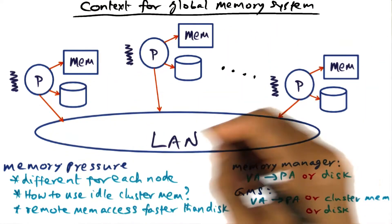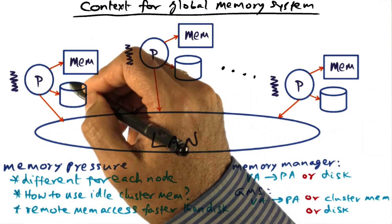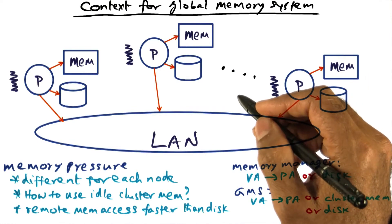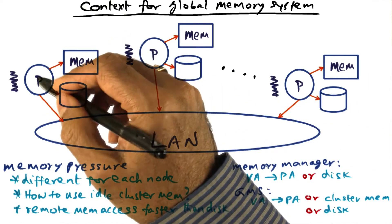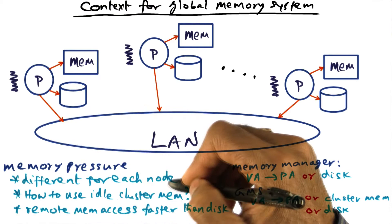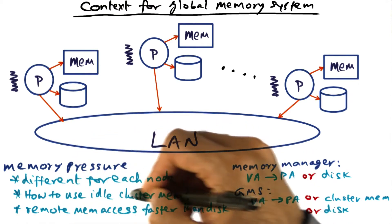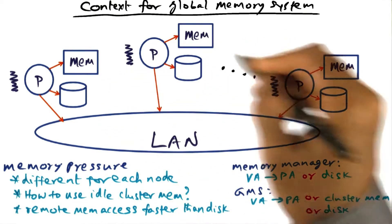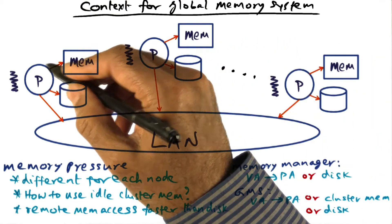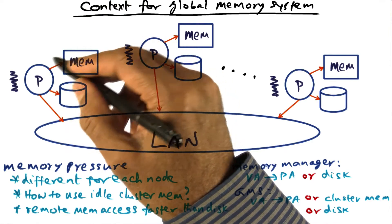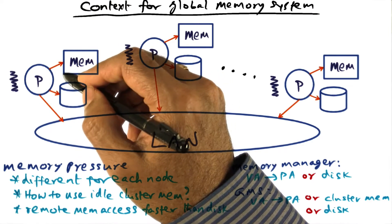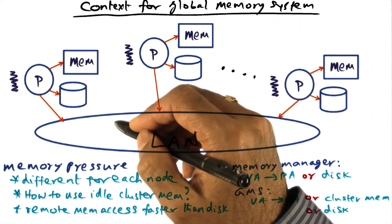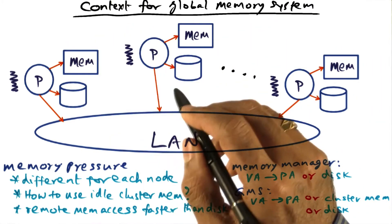This opens up a new line of thought. Given that all these nodes are connected on a local area network and some nodes may be busy while others may be idle, is it possible — if a particular node experiences memory pressure — to use the idle cluster memory? Specifically, can we use the cluster memory that's available for paging in and out the working set of processes on this node, rather than going to the disk?